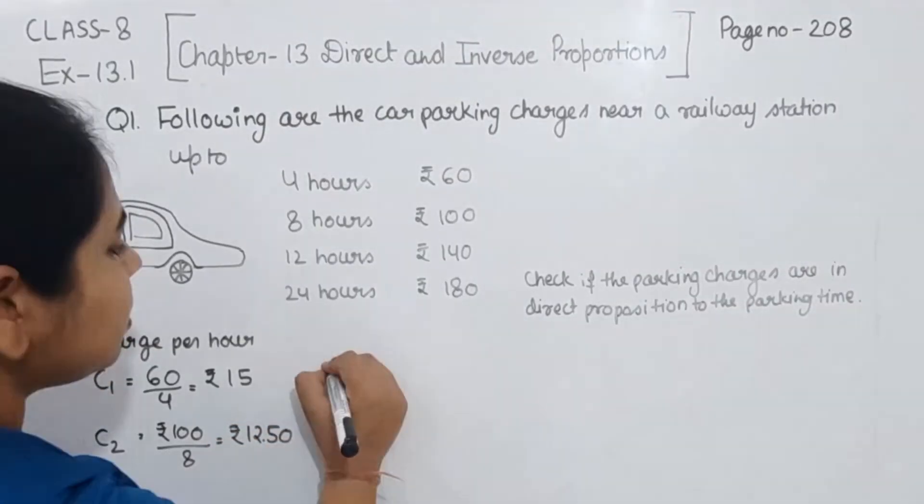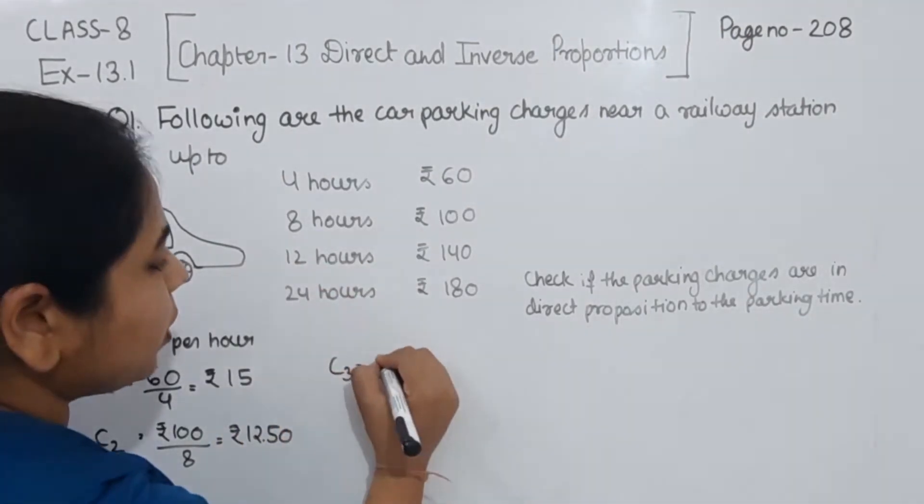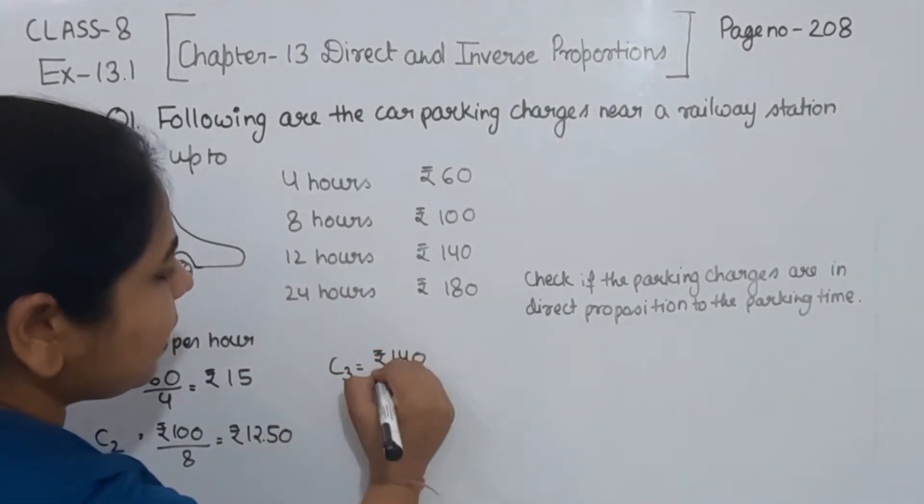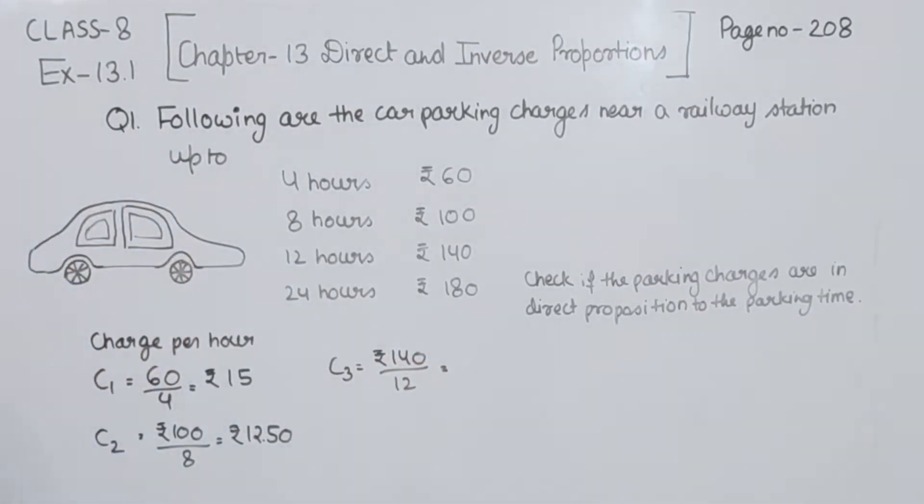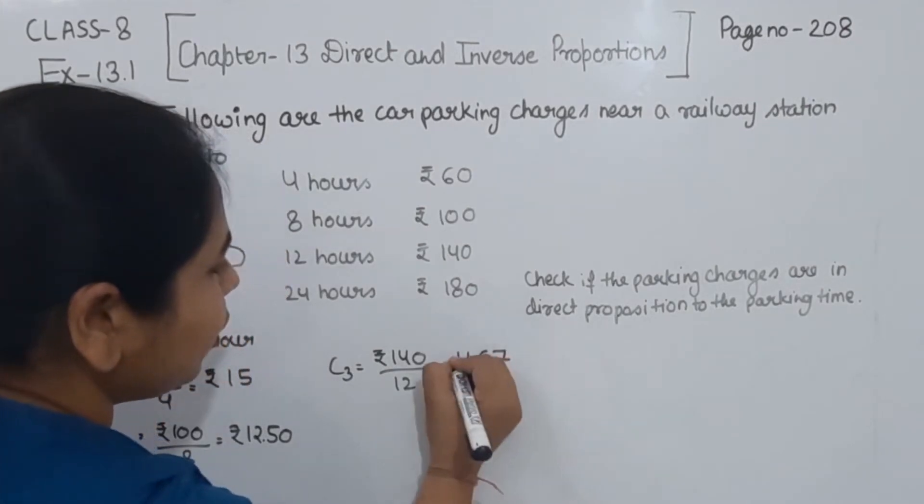Now comes to the third combination, this one we are having 12 hours Rs. 140. So Rs. 140 divided by 12 hours, this one we are having as equal to Rs. 11.67.